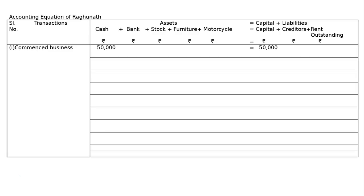Second transaction: paid into bank Rs. 10,000. It will reduce cash and increase bank balance by 10,000, because cash went out from the shop and entered into our bank account. Hence plus minus zero — that is LHS is equal to RHS — and we get our new equation.